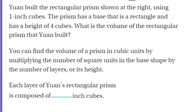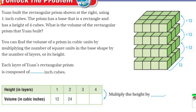You can find the volume of a prism in cubic units by multiplying the number of square units in the base shape by the number of layers, or its height. So we're learning that layers and height are synonymous. It's like when you get a three-layer cake — you have one layer, then another layer of fudge, another layer of chocolate. Each layer of Yuan's rectangular prism is composed of 12 inch cubes. We can see that from the picture — that base layer was 12 inch cubes.